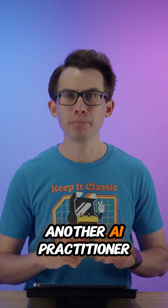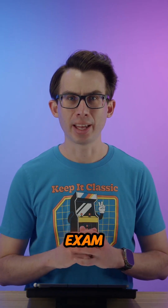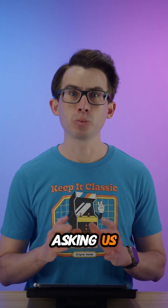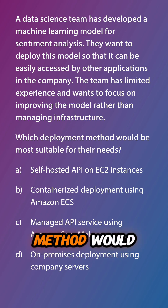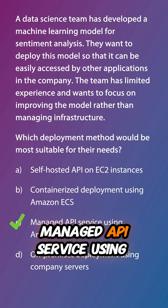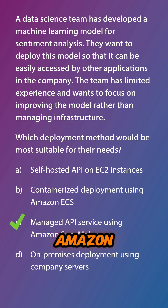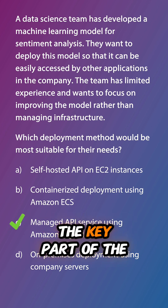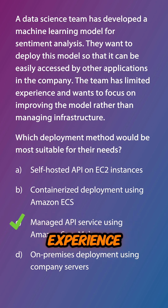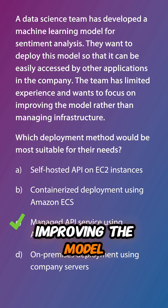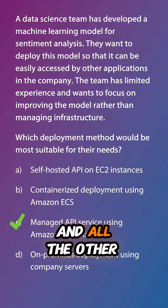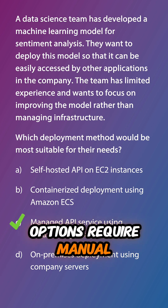Welcome back everyone to another AI Practitioner ExamByte. Reviewing the question from the previous episode, asking us which deployment method would be most suitable — the answer is C, managed API service using Amazon SageMaker. The key part of the question was that the team has limited experience and wants to focus on improving the model rather than managing infrastructure, and all the other options require manual management.